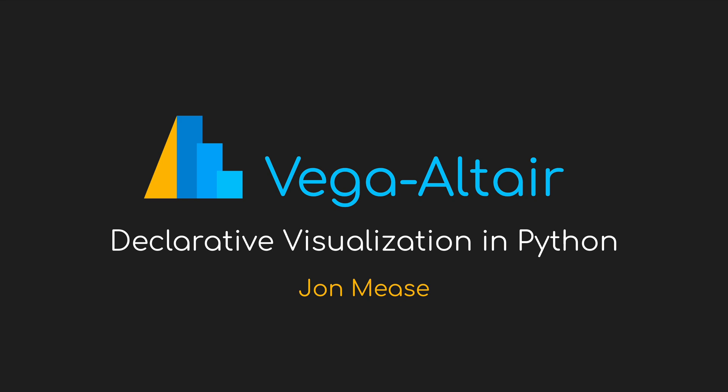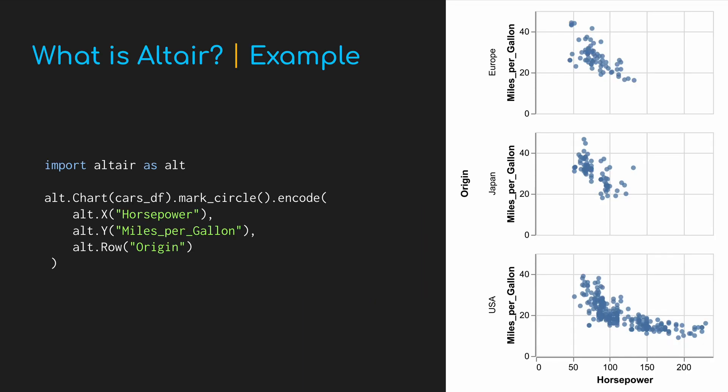My name is John Mies, and I'm excited to have a chance to talk with you today about declarative visualization in Python using Altair. If you're not familiar, Altair is a declarative visualization library for Python. Here's a quick example of what this looks like for a faceted scatterplot — we're plotting horsepower versus miles per gallon, faceted by country of origin.